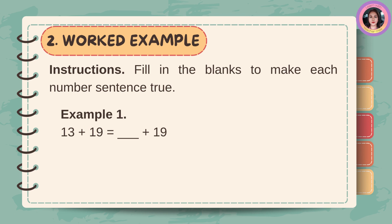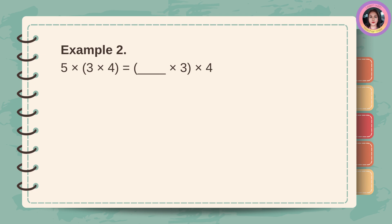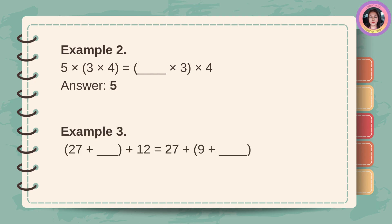Look at these examples. Instructions: Fill in the blanks to make each number sentence true. Example number 1: 13 plus 19 is equal to blank plus 19. Answer: 13. Example number 2: 5 times (3 times 4) is equal to (blank times 3) times 4. Answer: 5. Example number 3: (27 plus blank) plus 12 is equal to 27 plus (9 plus blank). Answer: 9 and 12.